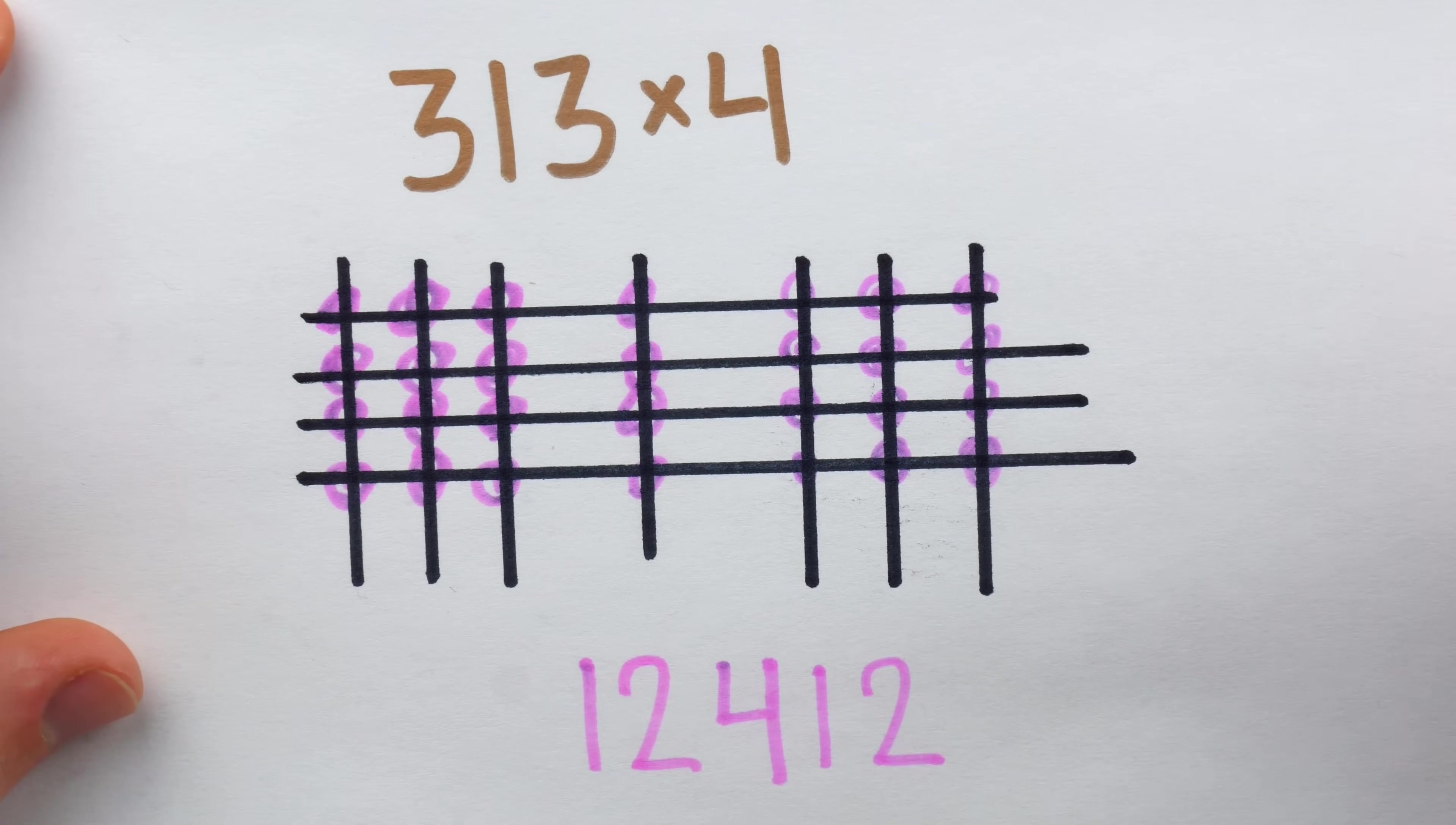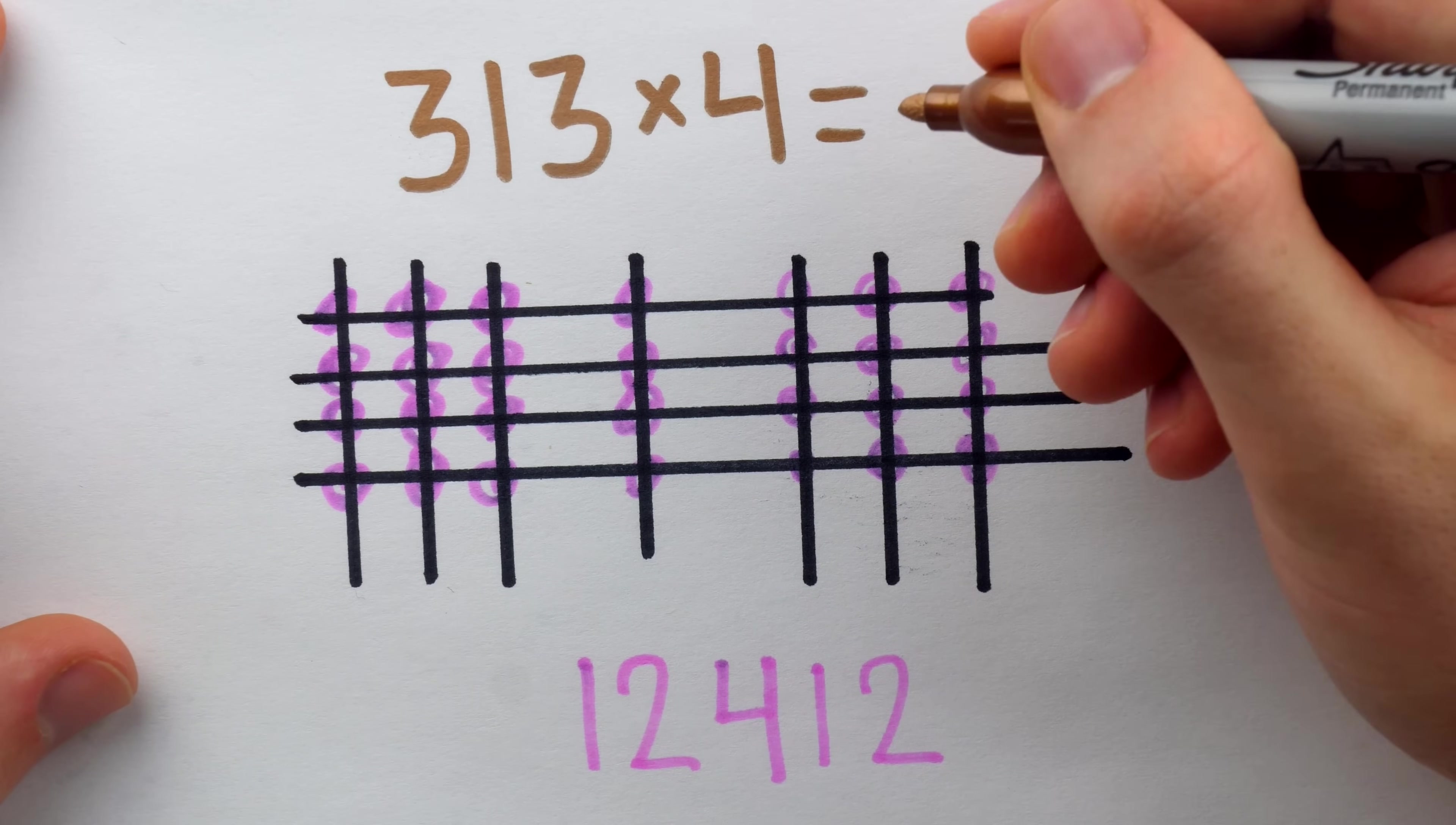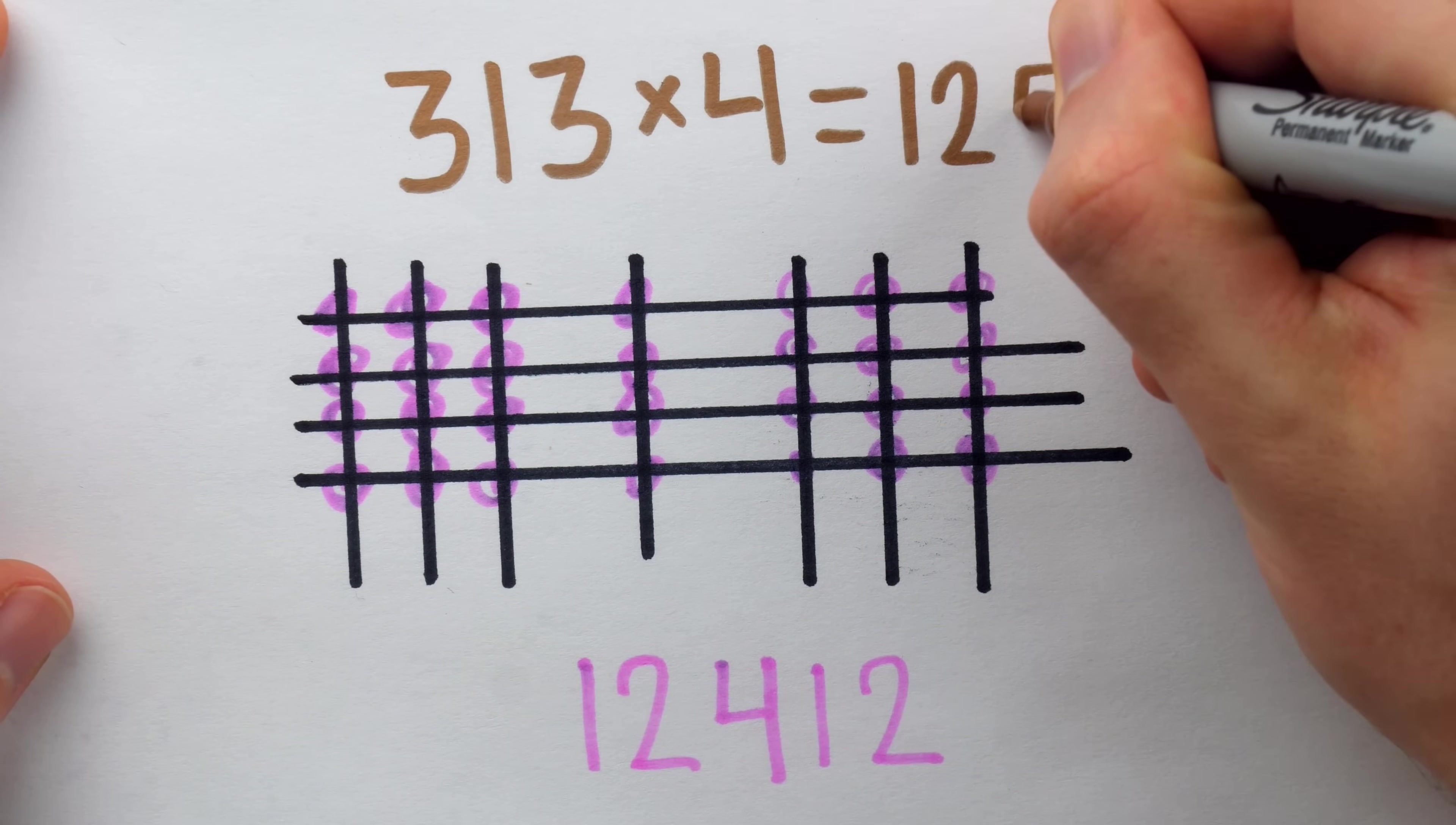But this is not correct, this is way too big. The correct answer to this multiplication problem is 1,252.